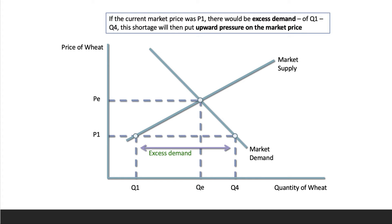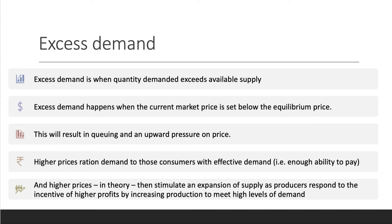Excess demand is when the quantity demanded exceeds available supply, and it happens when the market price is below the equilibrium. Typically we end up with a queuing system or upward pressure on price, and those higher prices tend to ration demand to those consumers with effective demand — in other words, they have the willingness and the ability to pay.